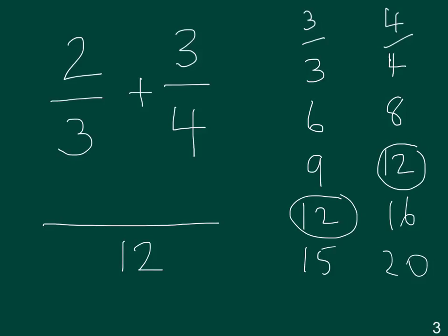So then we know 3 goes into 12 four times, 4 times 2 is 8. 4 goes into 12 three times, 3 times 3 is 9. So our answer is going to be 17 over 12, or if we simplify that, 1 and 5 twelfths.